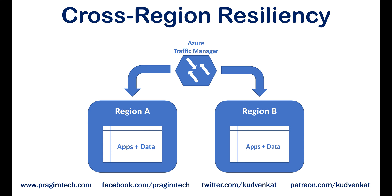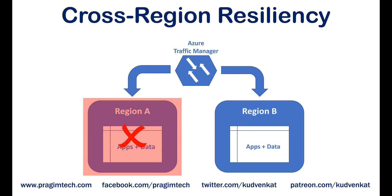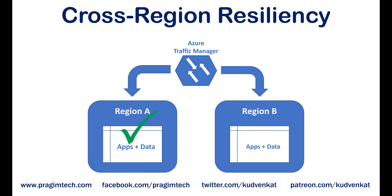We can get this resiliency by deploying our application and data in at least two regions. In this example, we have our application and data deployed in two regions, region A and region B. If there is a region level failure — let's say region A has gone down — the Azure traffic manager is smart enough to send all the requests to region B. The end user gets the same response and does not even know there is a region level failure. When region A is back online, the Azure traffic manager will distribute the traffic between both regions again.